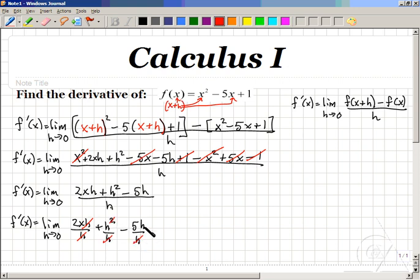f prime of x is equal to the limit as h goes to 0 of 2x plus h minus 5.